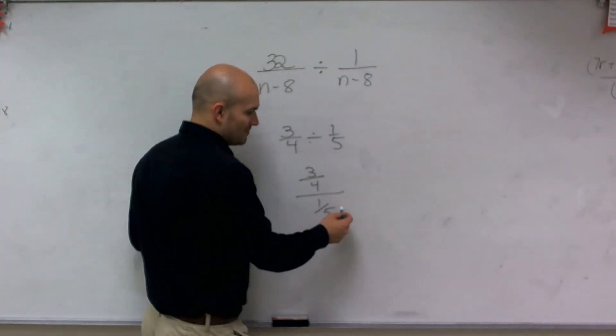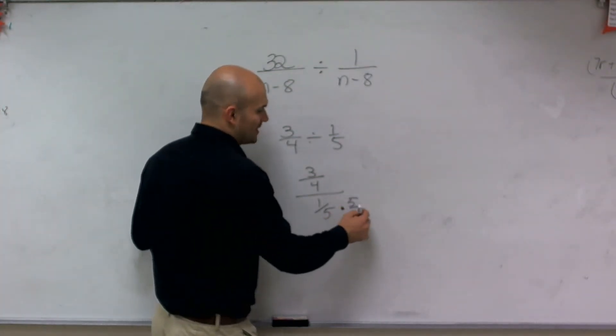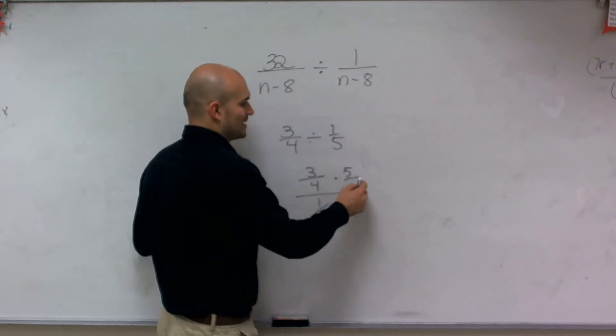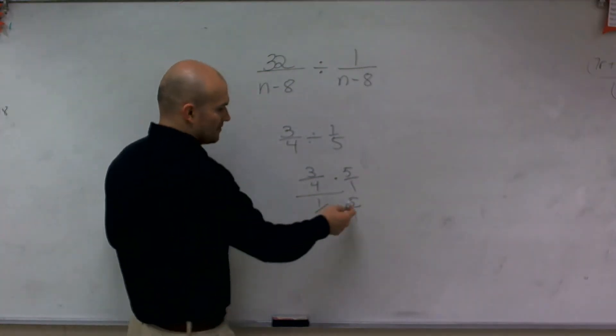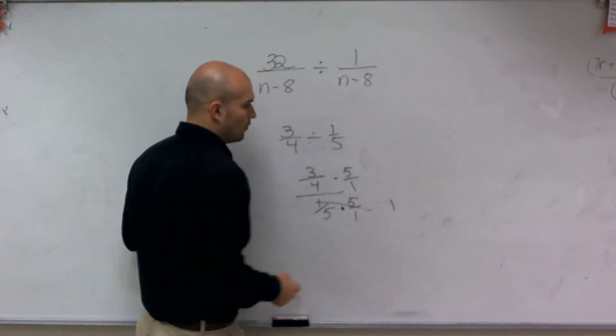But what I can do to get rid of my fractions is I can multiply by the reciprocal. And whatever I multiply on the bottom, I have to multiply on top. And what you notice is when dividing these fractions, a number multiplied by its reciprocal goes to 1.